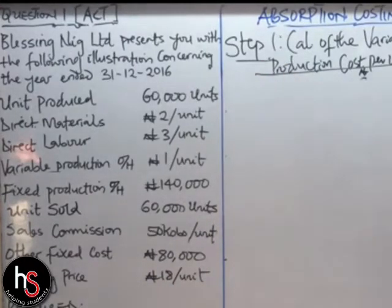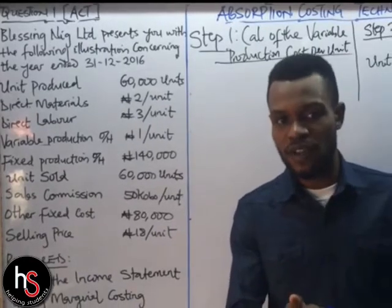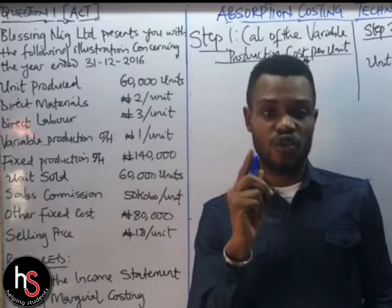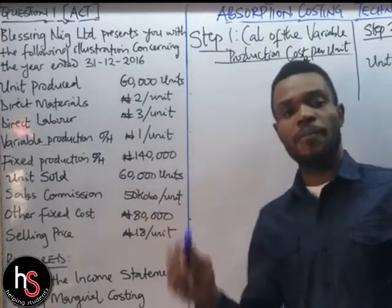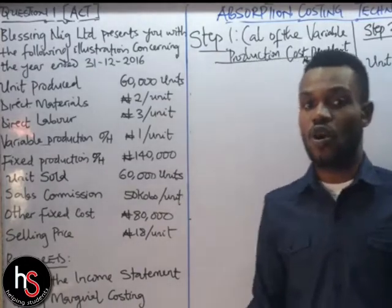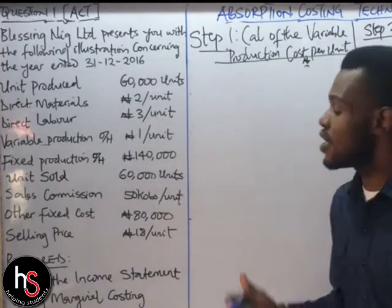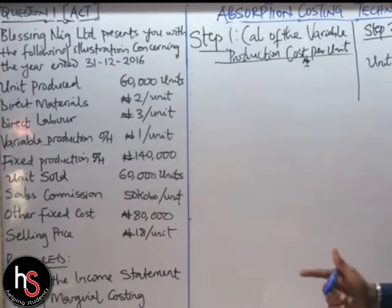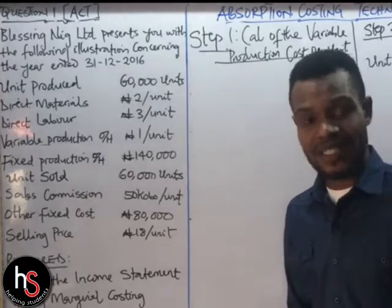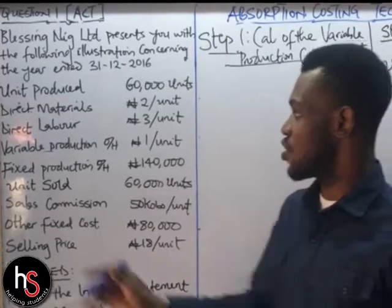Step 1: the calculation of the variable production cost per unit. If you have not watched the previous video on Marginal Costing Techniques, please watch that before this video so you understand the steps I'm going to take while solving this question. Now, since this is the Absorption Costing Technique, we are going to make use of both the variable cost and the fixed cost.